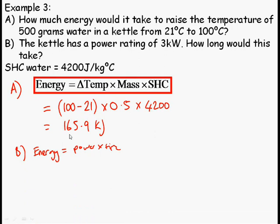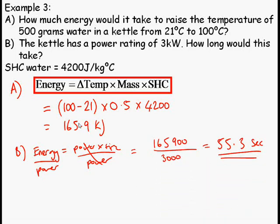So, part B. Energy. The formula I had at the beginning, energy is equal to power times time. Rearrange it by dividing both sides by power. Cancel out the power. I've got energy divided by power is equal to time. So, 165.9 kilojoules, or this number, divided by 3,000 gives me 55.3 seconds.